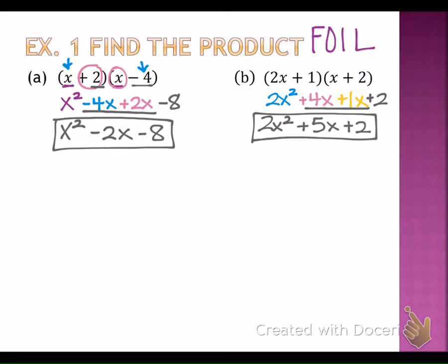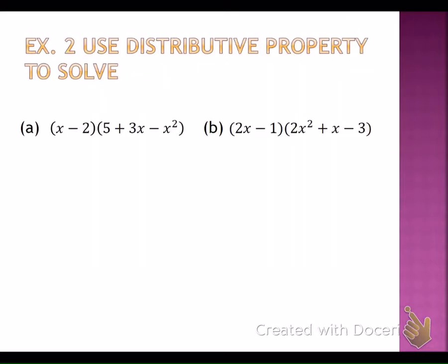Now let's look at example number two. This says use the distributive property to solve. The question is, why can we not use FOIL? Why is it telling us to use the distributive property? Look at letter A — we are no longer multiplying two binomials. We have a binomial times a trinomial. So we cannot use FOIL in this instance; we're going to use the distributive property.